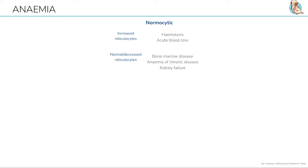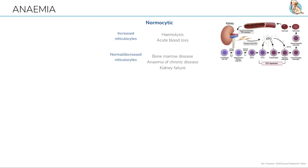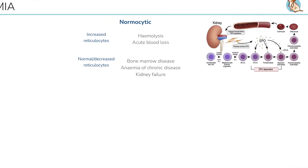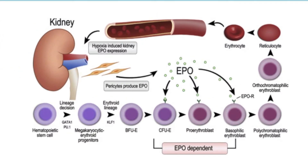If we see increased reticulocytes — premature red blood cells — then we are more likely to think of loss or destruction of blood cells. If the reticulocytes are normal or decreased, this suggests there is an issue with production, which might be due to bone marrow disease or chronic disease. Chronic kidney disease in particular is a cause, as erythropoietin is synthesized in the kidneys and regulated by oxygen tension in renal tissue, so chronic kidney disease can cause anemia too.